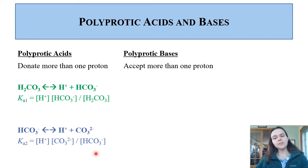You can also examine this in reverse. While carbonic acid H2CO3 is a diprotic acid because it can lose two protons, carbonate CO3 2- is also a polyprotic weak base because it can accept two protons.